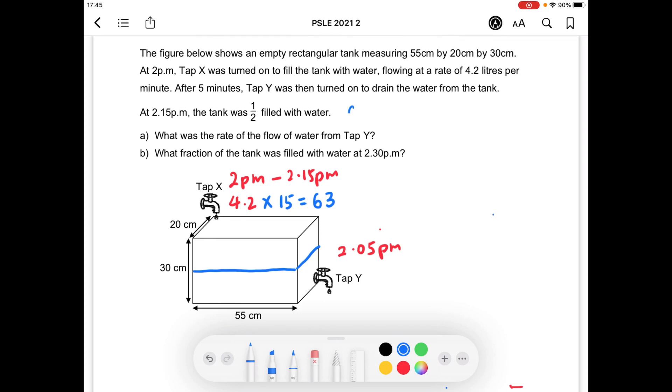Next, we can also find out the amount of water in the tank at 2:15 p.m. Because it's half filled, we're going to take half the tank's length, the tank's breadth, the tank's height. And we will get 16,500 cubic centimeters of water. Change that to liters, we will get 16.5 liters.